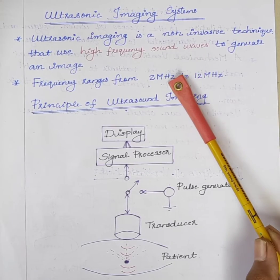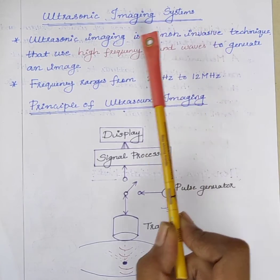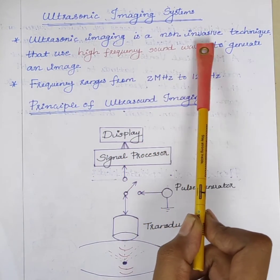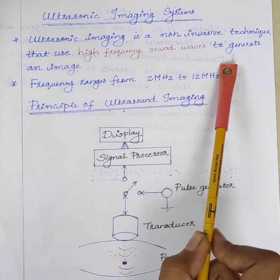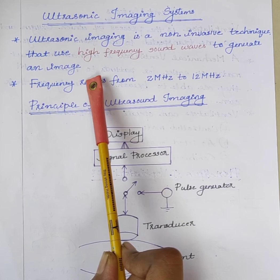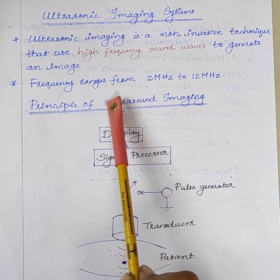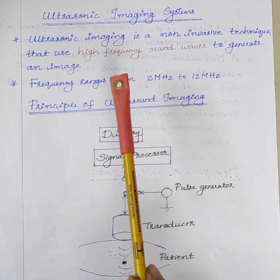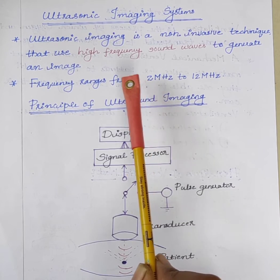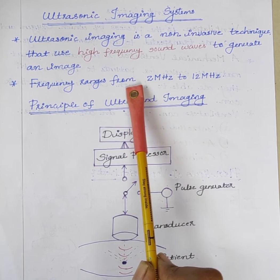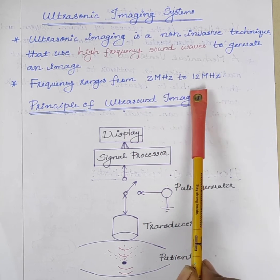Good morning students. Today we will discuss ultrasonic imaging systems. Ultrasonic imaging is a non-invasive technique that uses high frequency sound waves to generate an image. A high frequency sound wave is transmitted into the body, and returning echoes are analyzed to create an image. The frequency of the sound waves used are usually in the range of 2 megahertz to 12 megahertz.